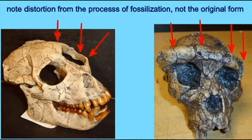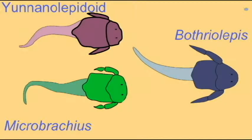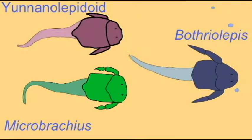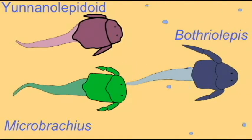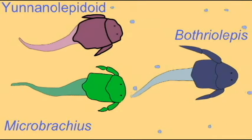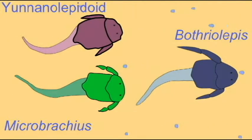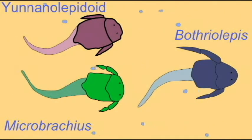Sometimes the process of fossilization will change a specimen so that two specimens which look different may have been similar in life, but changed over the process of fossilization. And so not all fossils which appear to be different should be considered as separate species.